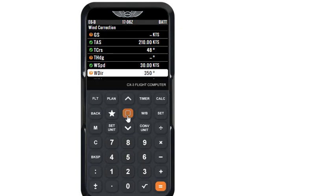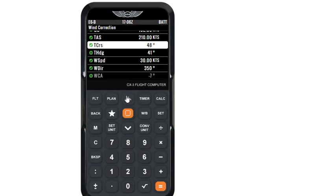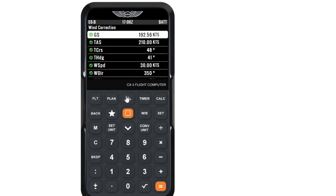Let us press enter and we get wind correction angle of minus 7 degrees. And we get heading as 041 degrees and ground speed as 192 knots. So, let us write down this figure.